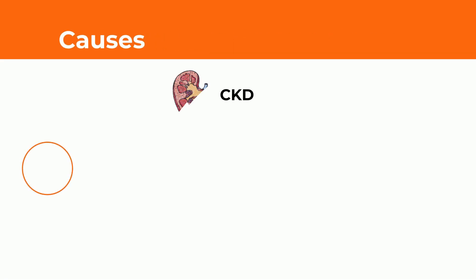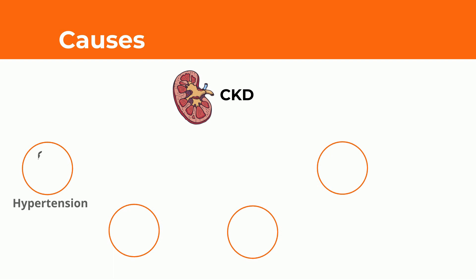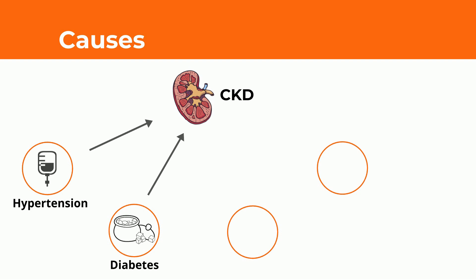Now let's discuss the causes of chronic kidney disease. Hypertension, or high blood pressure, can be a cause for kidney disease as the pressure damages small blood vessels in your kidneys. Another high-risk group is individuals with diabetes, as excessive glucose can damage the filters in the kidneys. However, other causes such as glomerular sclerosis, which involves the scarring and hardening of the glomerulus, can also influence the onset of this disease.